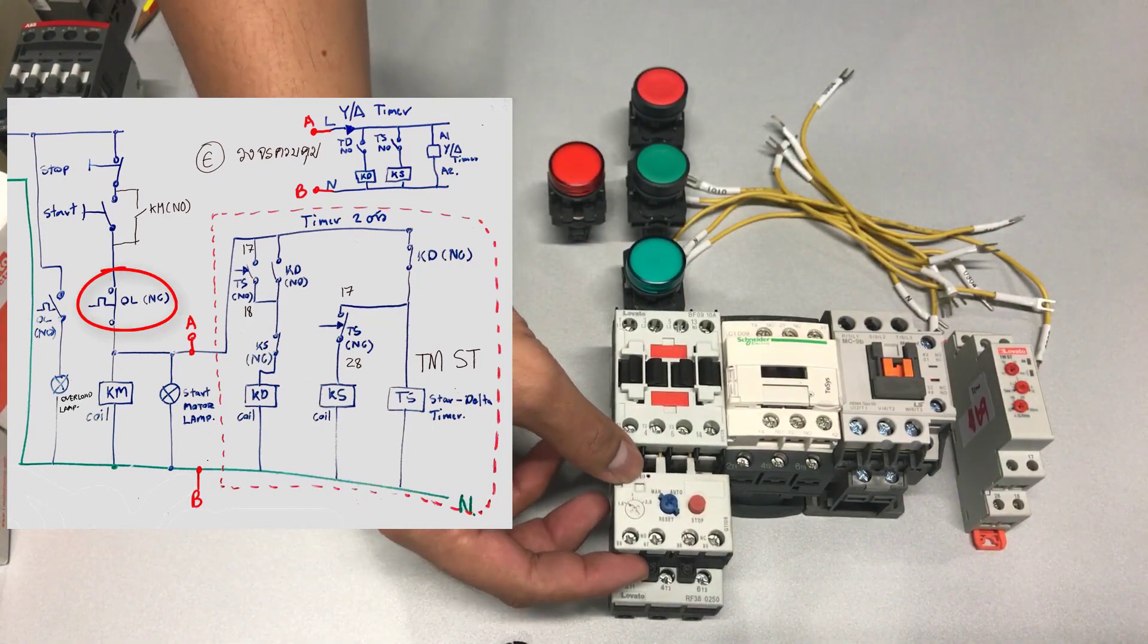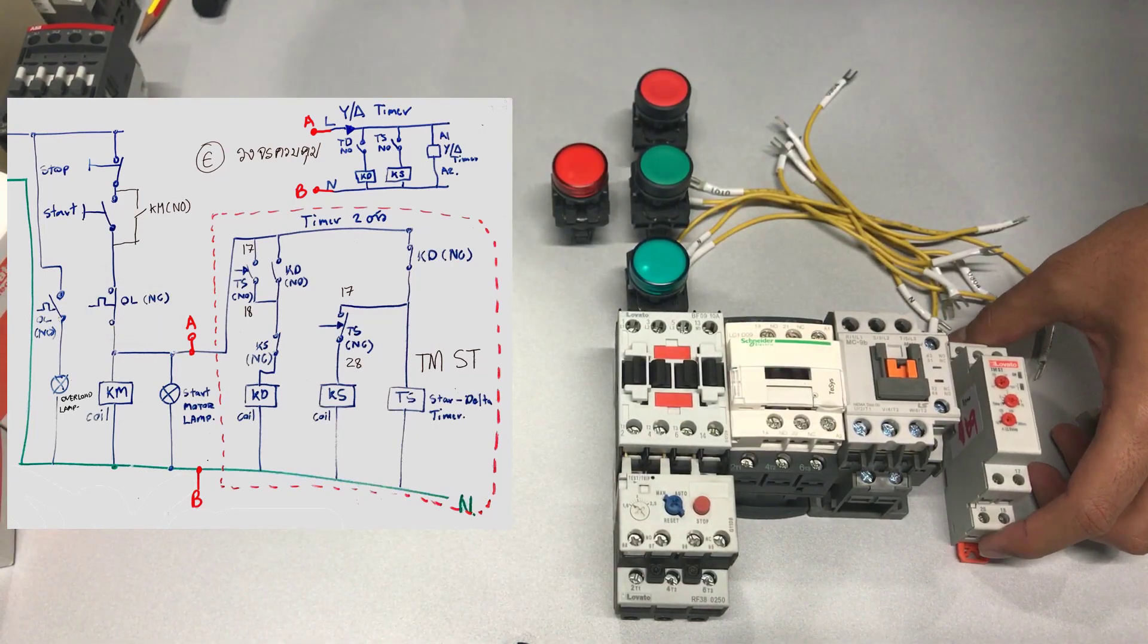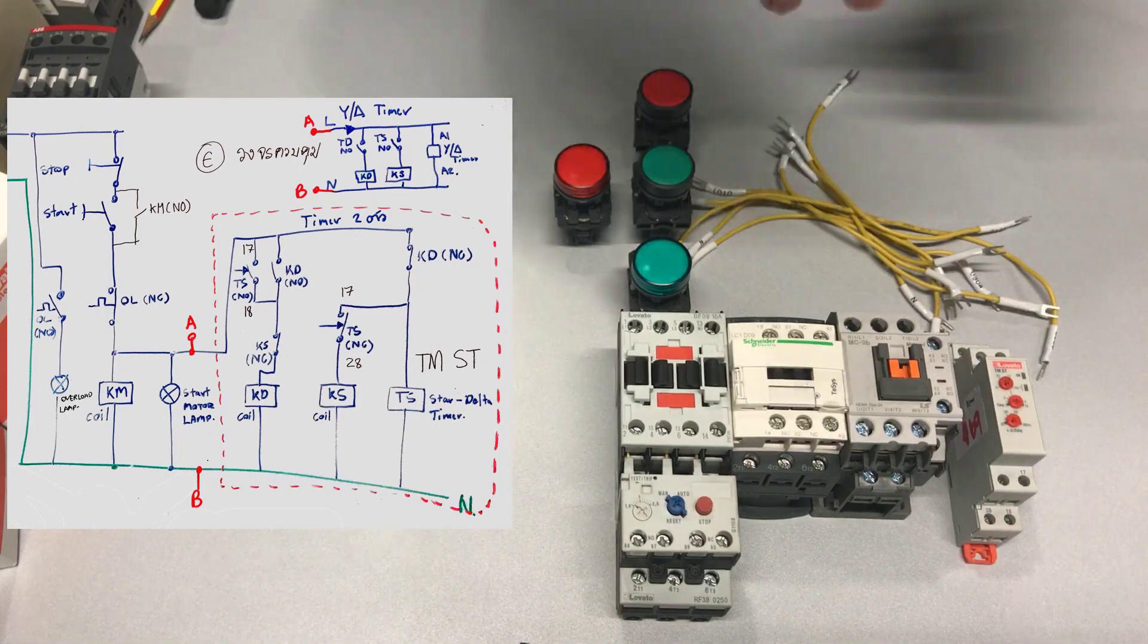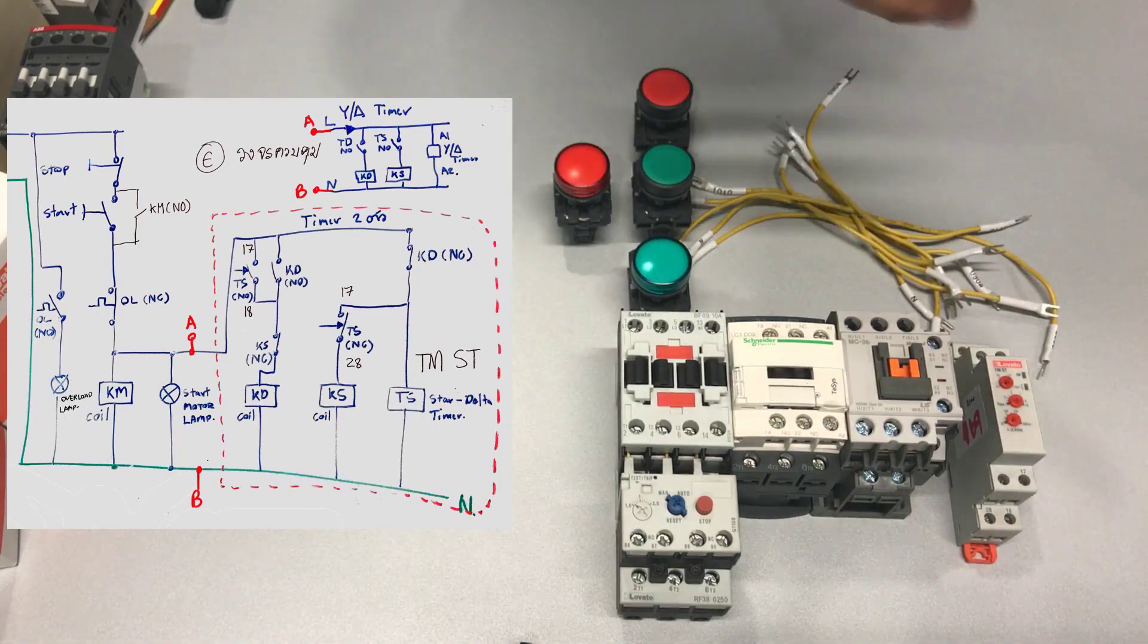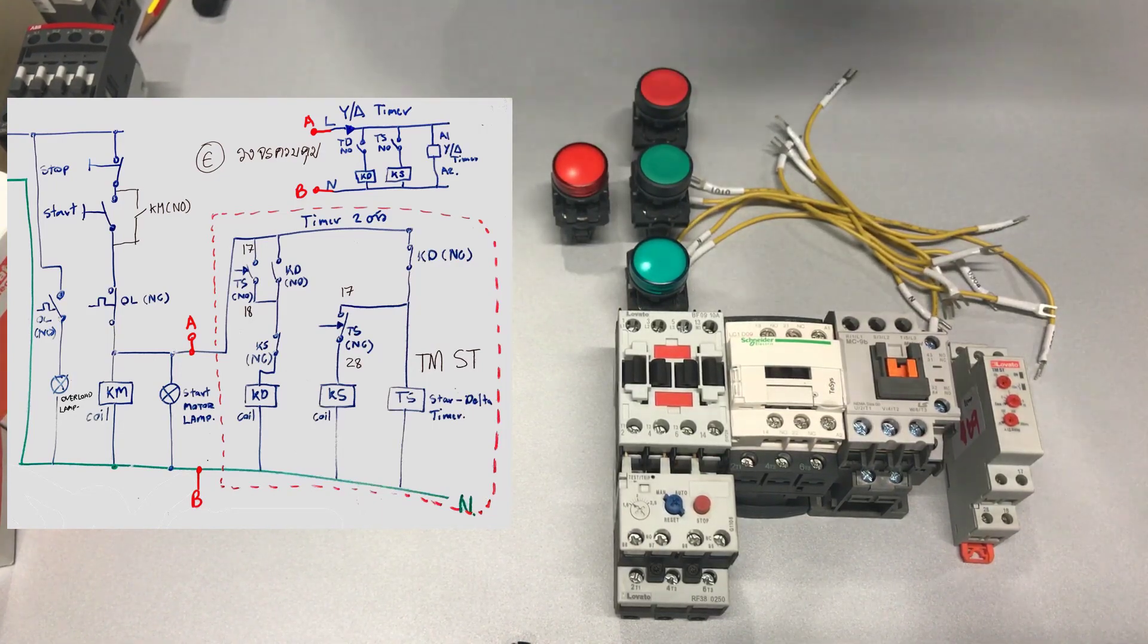The main one will need to have an overload relay connected to it. Lastly, you will need a star delta timer which will be used to sequence the contactors. We don't recommend using a normal timer since it is better to have a delay function.